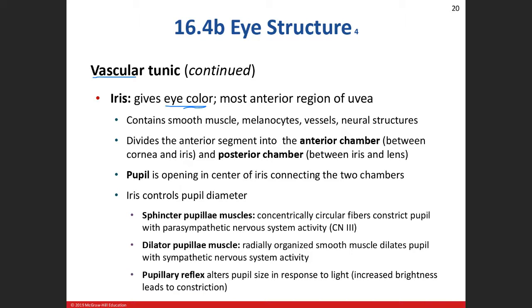Those compartments are called the anterior and posterior chambers. What you need to understand about the iris: first, it has melanocytes, which give color to our eye and help absorb stray light. Second, it has smooth muscle, which plays a role in changing the diameter of the pupil.